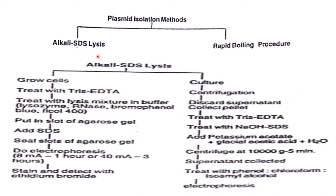Plasmid isolation methods are either alkali SDS lysis or rapid boiling procedure. For alkali SDS lysis, if you take a growing cell, you treat it with Tris-EDTA buffer, then treat with a lysis mixture in buffer which consists of lysozyme, RNase, and bromophenol blue. This is then put into a slot of agarose gel, SDS is added, the slot of agarose gel is sealed, and electrophoresis is performed, then stained and detected with ethidium bromide.